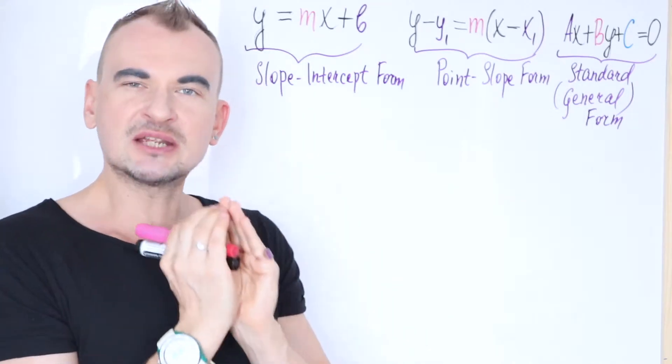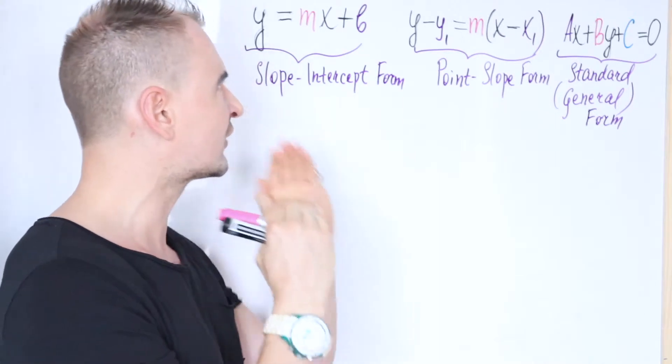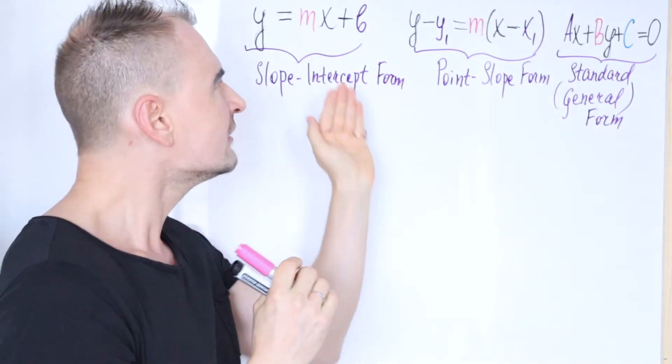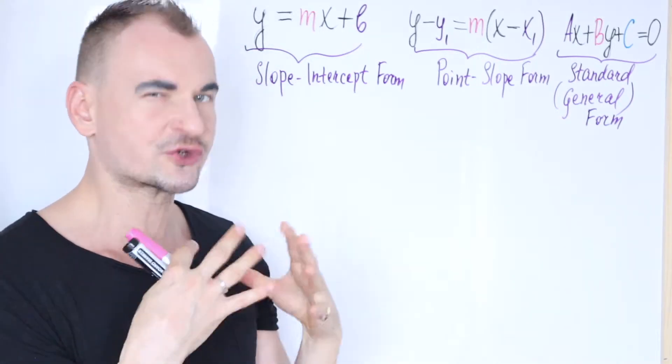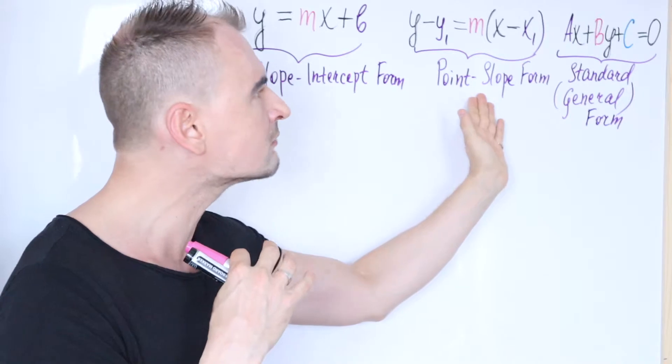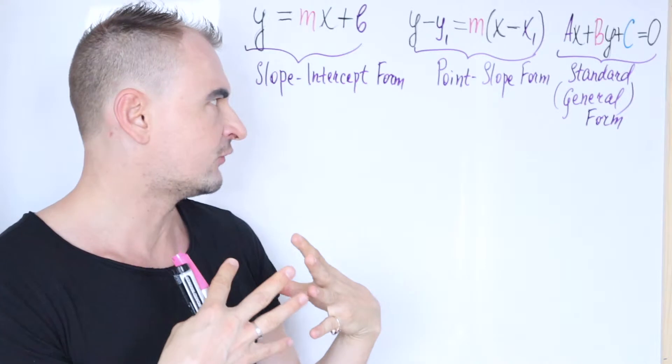Generally speaking, the equation of a straight line can be given in three different forms, namely slope-intercept form, which is basically, I think, most used, also point-slope form, and so-called general form or sometimes standard form.